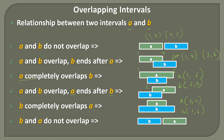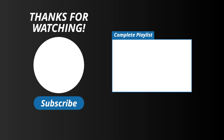So these are the 6 cases demonstrating overlapping intervals. For overlapping intervals, we need a minimum of 2 intervals, and there could be many intervals like A, B, C, D which can overlap with each other. In this video, we covered what are intervals and what are overlapping intervals. In future videos, we will see problems related to overlapping intervals. I hope you liked this video.